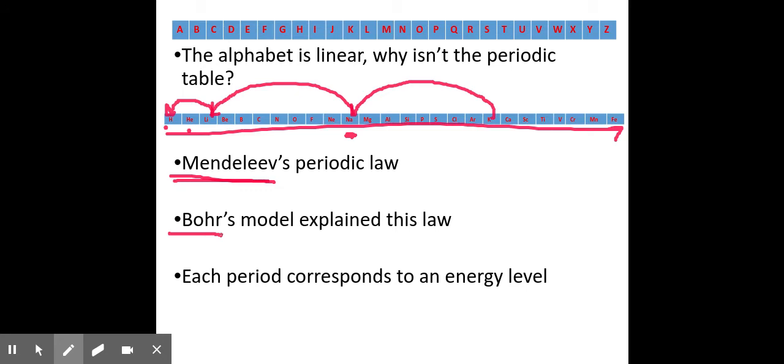Bohr's model now explains this: when electrons can only be in specific spots rather than anywhere like moths around a light bulb, maybe there's a pattern to those specific spots. The electrons around potassium have a similarity to the electron arrangement around sodium, which has a similarity to the arrangement around lithium. If they're arranged in a similar way, they'll exhibit similar properties. This is how we got to our different periods in the periodic table — each period corresponds to a particular energy level in the atom.